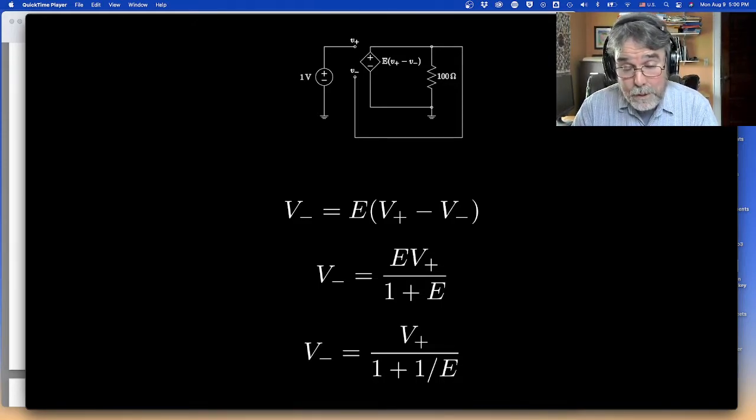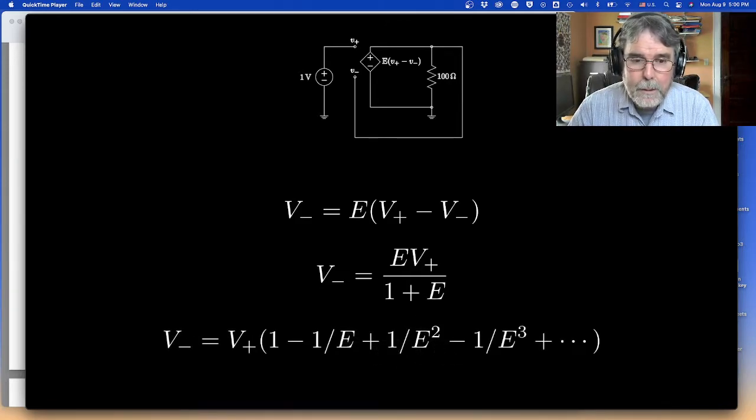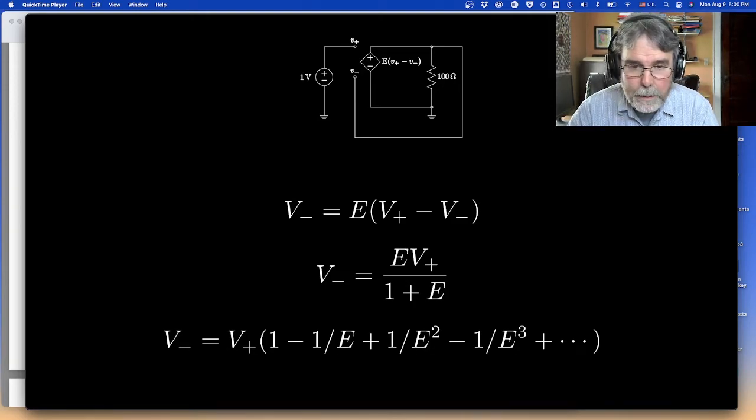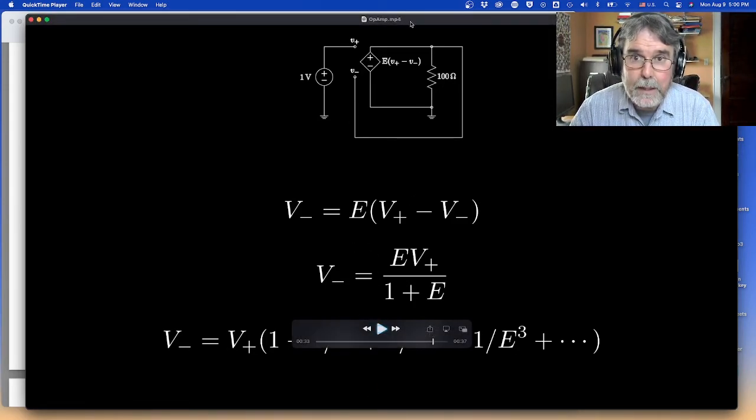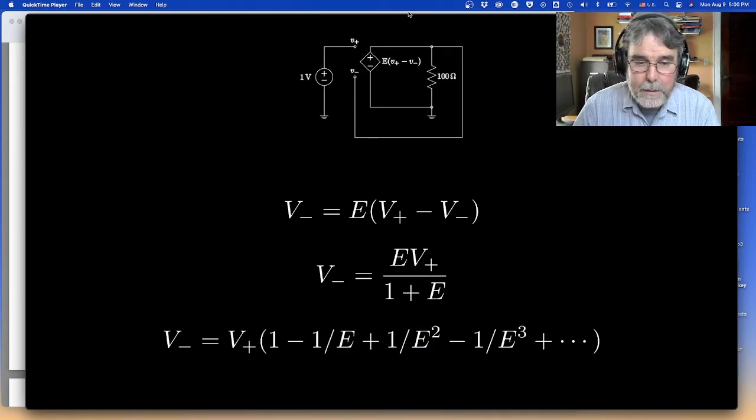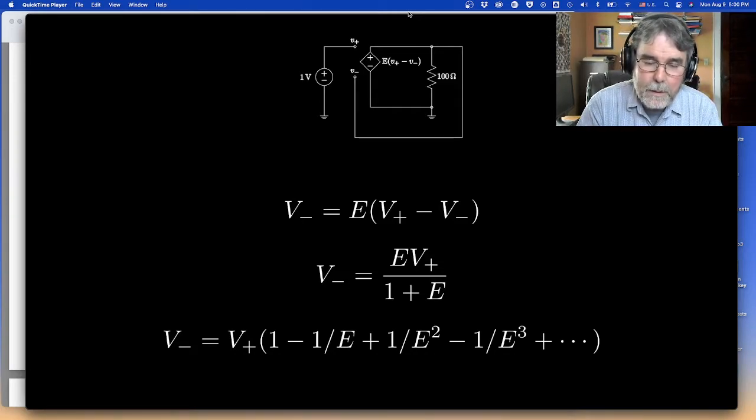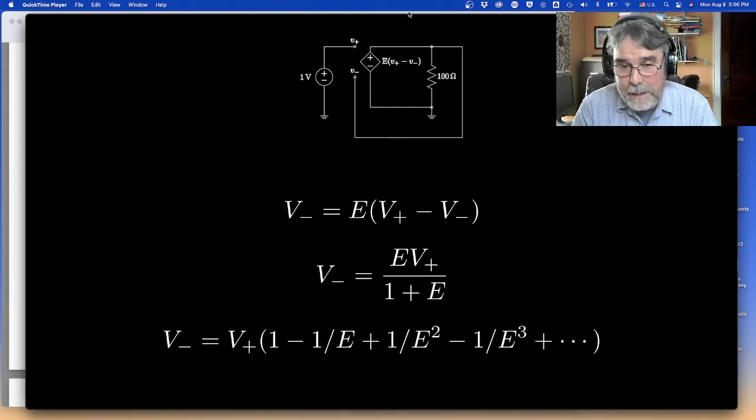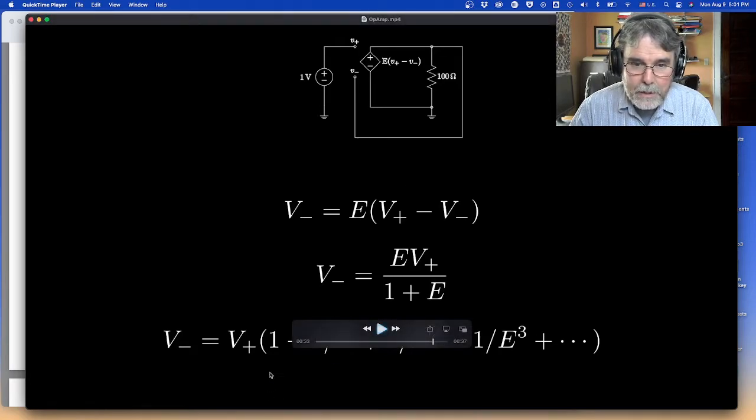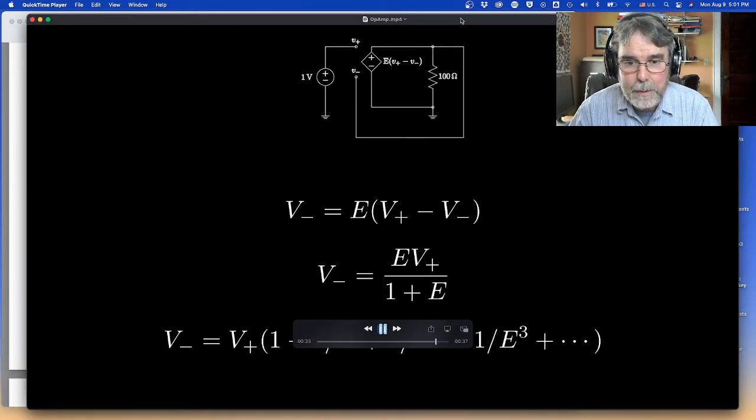But in a real amplifier, E is going to be something like tens or hundreds of thousands or maybe even millions. So one over E is going to be really small. So we can expand that one over E in the denominator and make it one minus one over E in the numerator. So you can see, take for example, the case where E is a hundred, then you can say V minus will be V plus times one minus one one hundredth. So it'll be within 1% of V plus. The next term is one ten thousandth. So it's a hundred times smaller. Each of these terms in this series is a hundred times smaller than the previous term. So we can basically neglect those other guys. And we can approximate it as just one minus one over E. That's the idea.